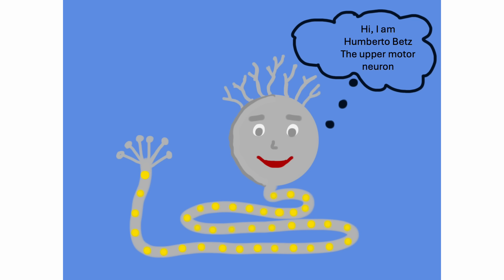Hi, I am Umberto, the upper motor neuron. I am a BETS cell. My head represents my cell body or soma. My dendritic hairs receive information from the premotor cortex, the thalamus, the somatosensory cortex, and inhibitory interneurons.